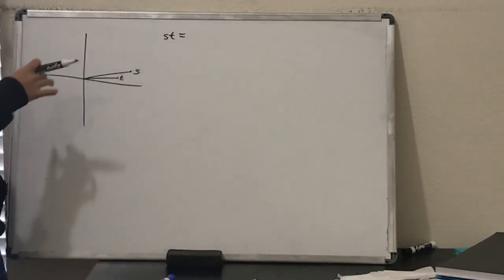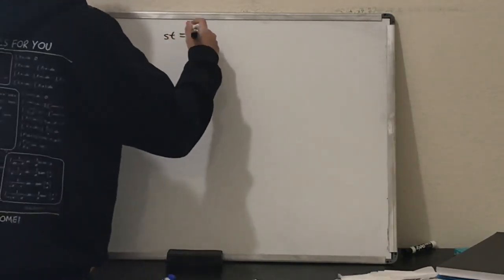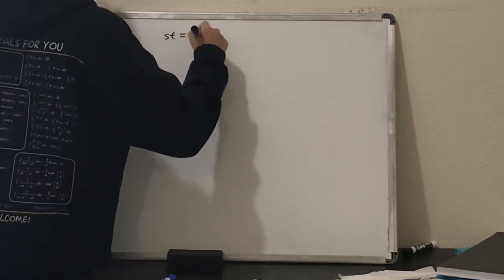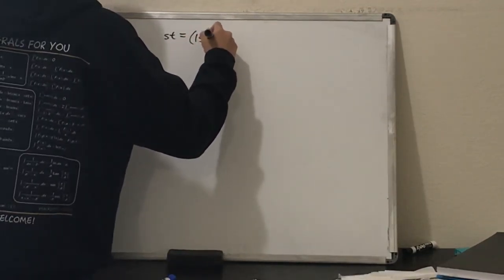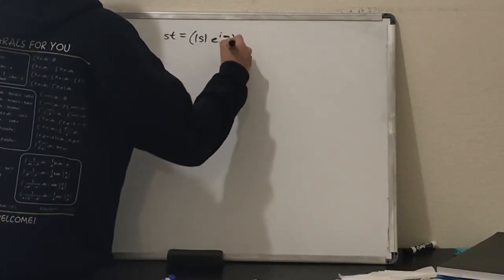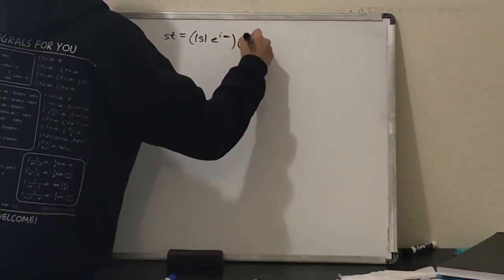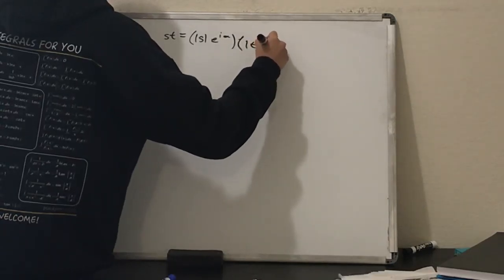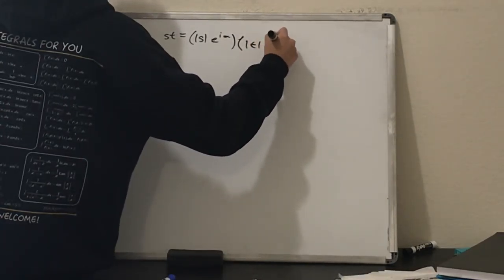So again, we're going to look at it in polar form. We're going to say s is magnitude of s, e to the i alpha, or phi, whatever you want to call it, and then we'll do magnitude of t, e to the i beta.